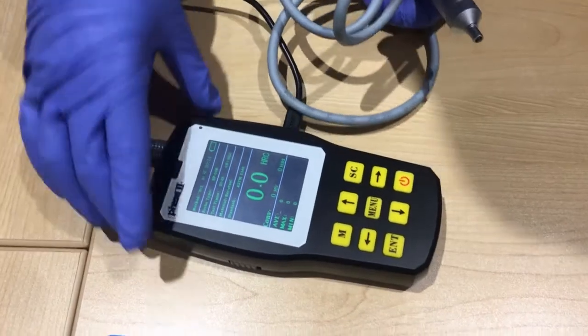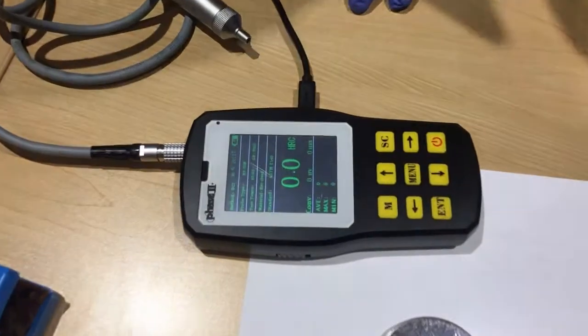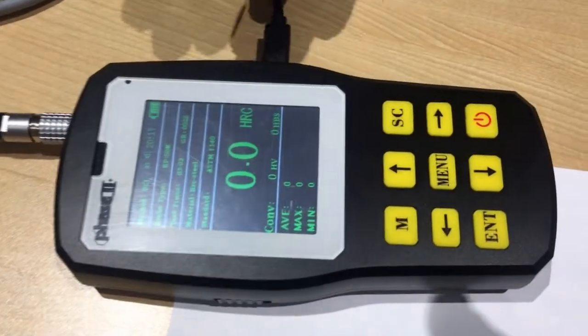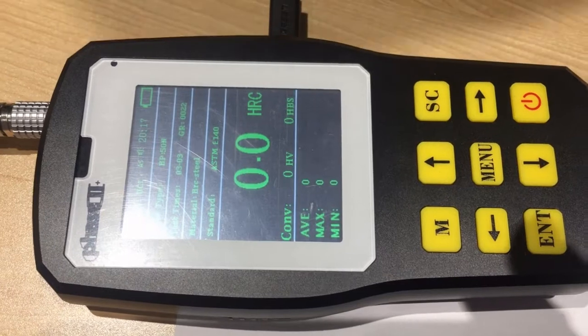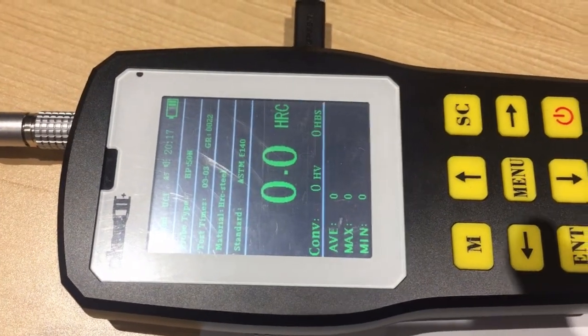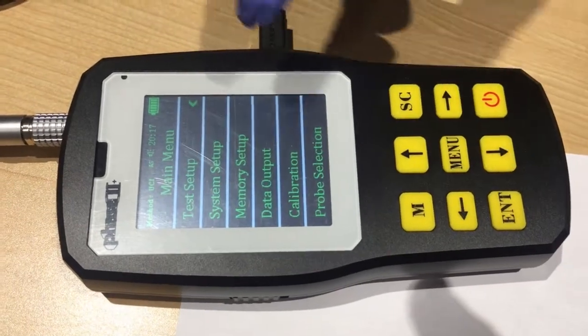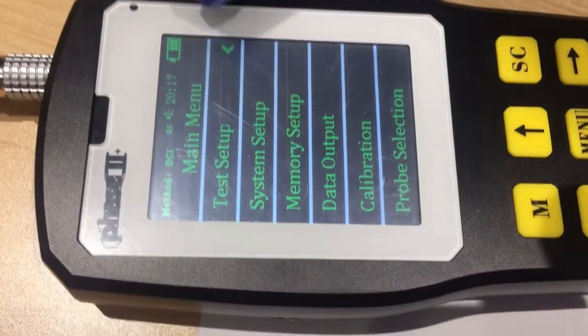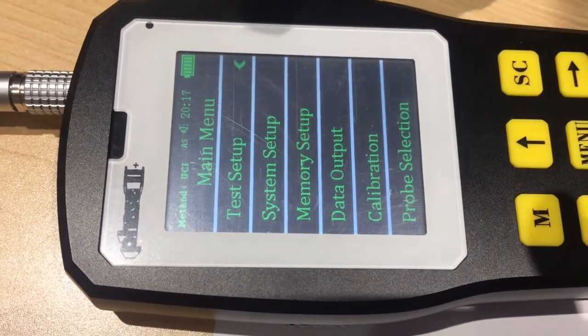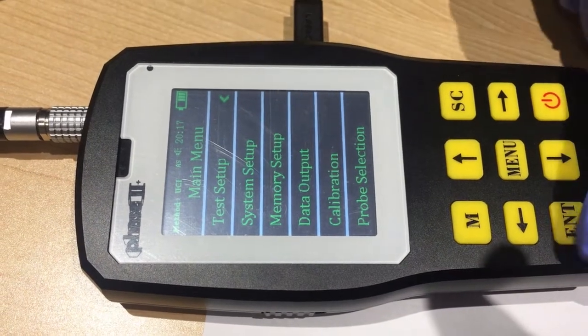Following, we are going to set up the calibration for the machine. Now we are on the main surface of this machine. Before we start, we got to set up something. So we press manual here, and we can see the following options. We choose test setup. See your cursor is on the test setup here, and press enter.